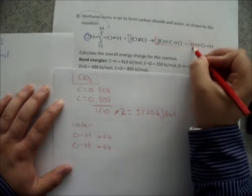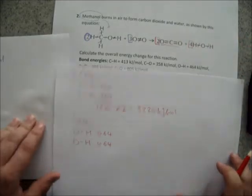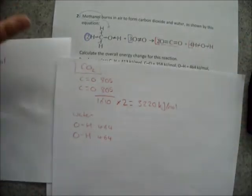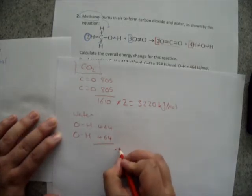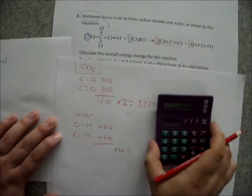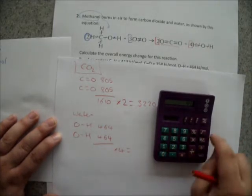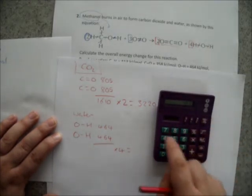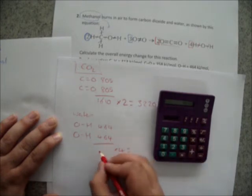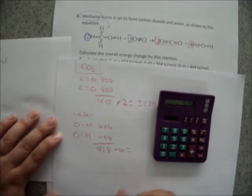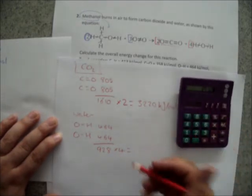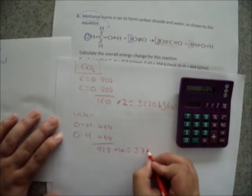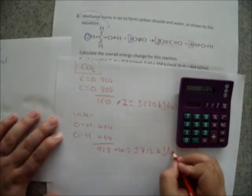There is more than one molecule of water being produced in this reaction. In fact, there are four. So, once we've added that up, we're going to times that by four. So, 464 plus 464 gives us 928. That's the bond energy of one molecule of water. But we have four of them. So, that's times that by four. And we find we have 3712 kilojoules per mole.